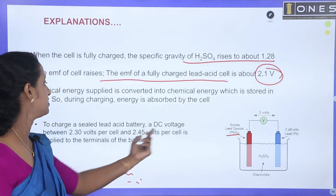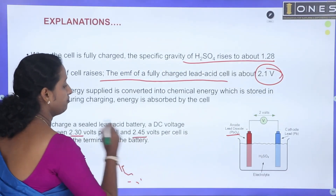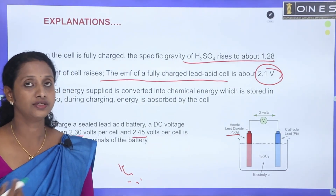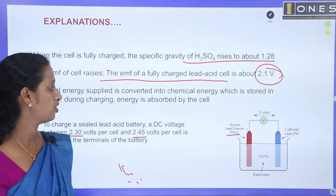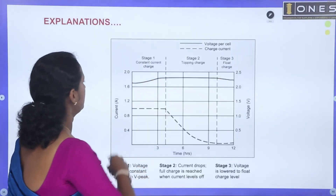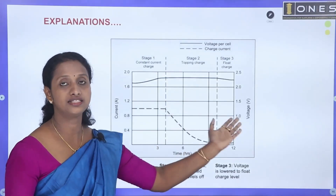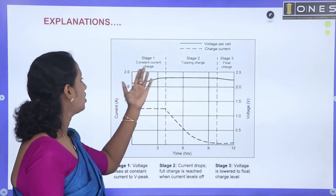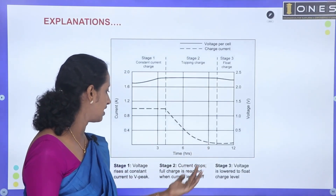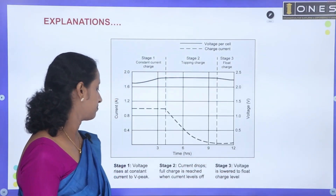We apply a DC supply voltage of 2.30 to 2.45 volts for charging. The three charging methods are: constant current charging, constant voltage charging, and float charging.